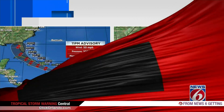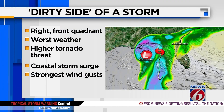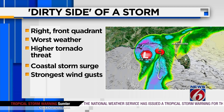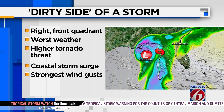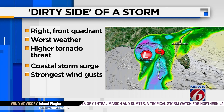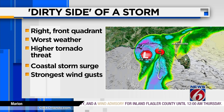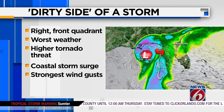Another term you may have heard us using, especially in regards to Elsa lately, is the dirty side of the storm. That is the storm's right front quadrant, which is relative to the motion of the storm — that's where the worst weather will be. On the dirty side, these weather conditions are more likely to occur: higher tornado threat, storm surge along the coast, and strongest wind gusts. Remember, all parts of the storm are bad, so take them seriously, but do know that the dirty side is just worse.